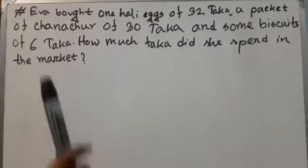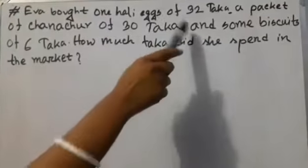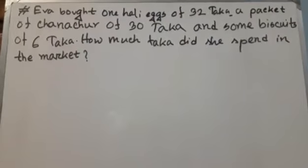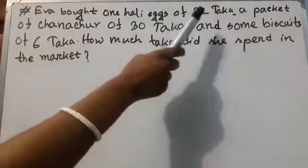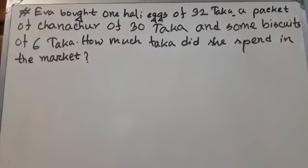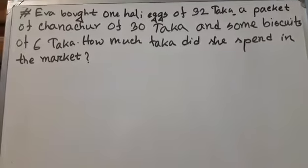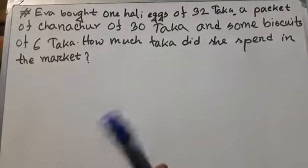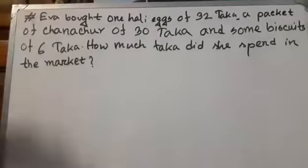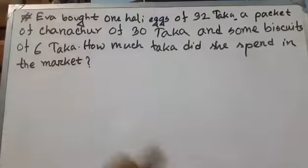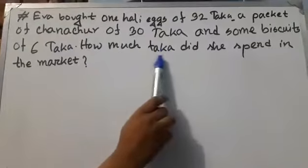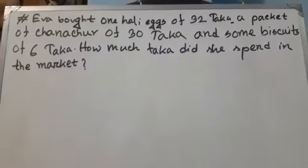Iva bought one hali eggs of 32 taka, a packet of chanachur 30 taka, and some biscuits 6 taka. How much taka did she spend in the market? So here we find out the total she spent in the market. We solve this math by addition because we find out how much taka she spent in total.